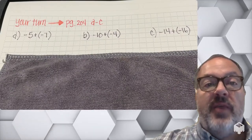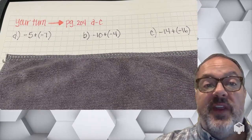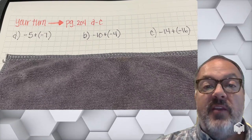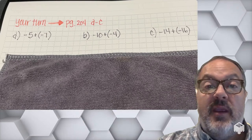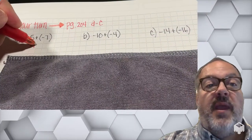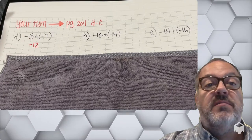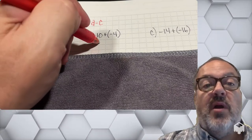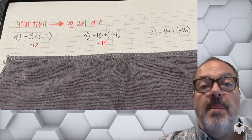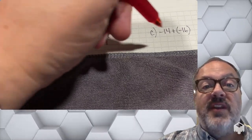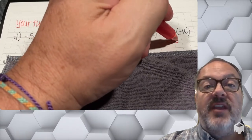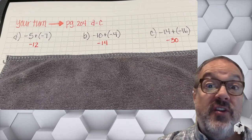Now it's your turn to try problems A through C on page 204. Pause the video here so that you can come back and check your answers with me. Problem A: negative 12. Problem B: negative 14. And in problem C, the sum of negative 14 plus negative 16 is going to be negative 30. How'd you do?